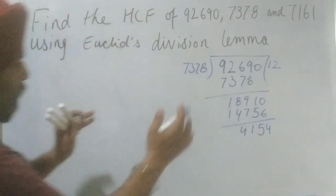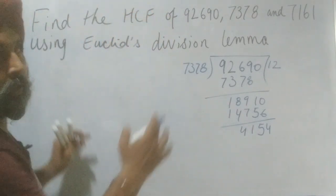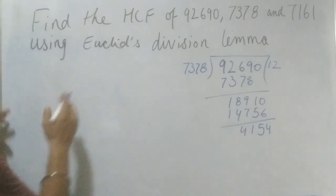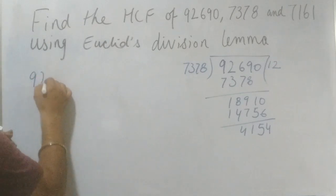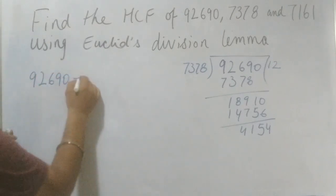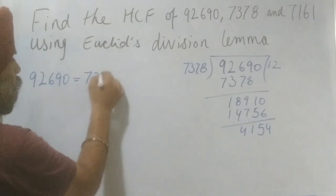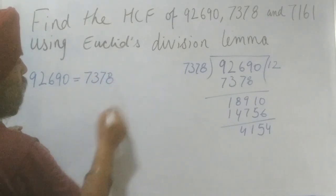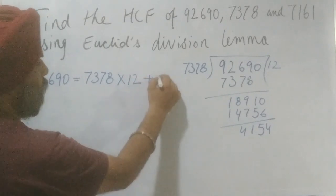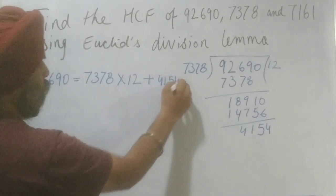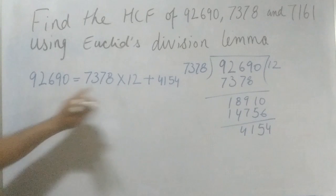So we have to subtract it, so this is 4, this is 5, this is 1, and this is 4. 4154. Now this step is complete, we are going to express this, represent this now in the Euclid Division Lemma. So first, 92690 is the dividend and divisor is 7378, and quotient is 12, and remainder is 4154. This is my first step representation.